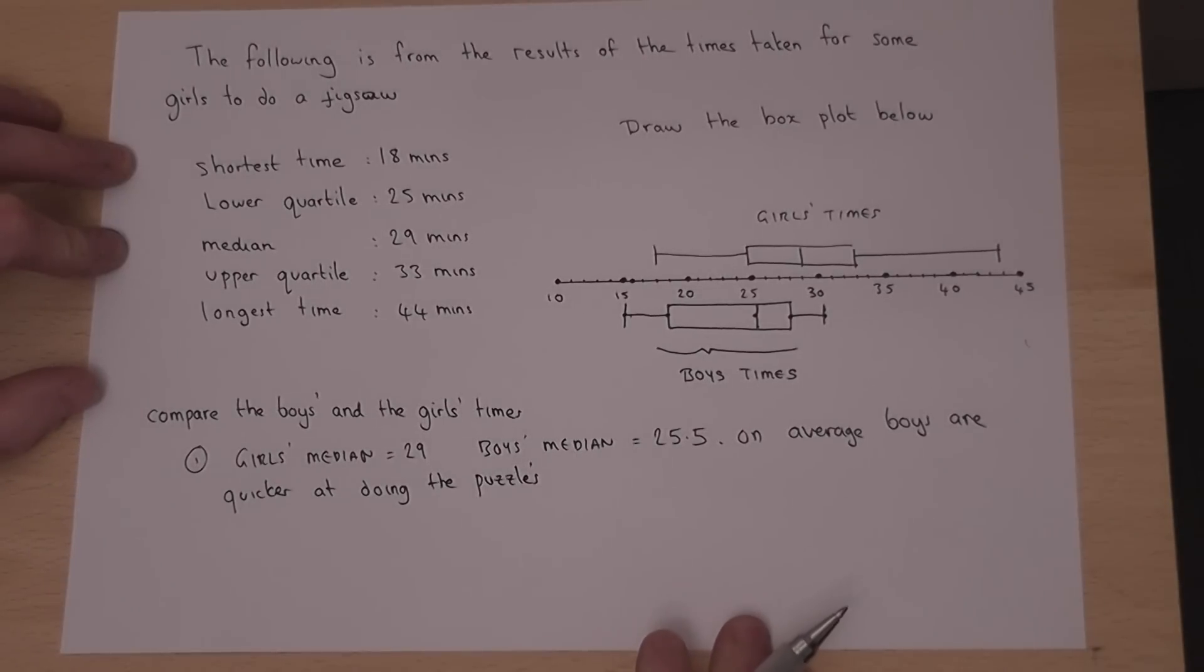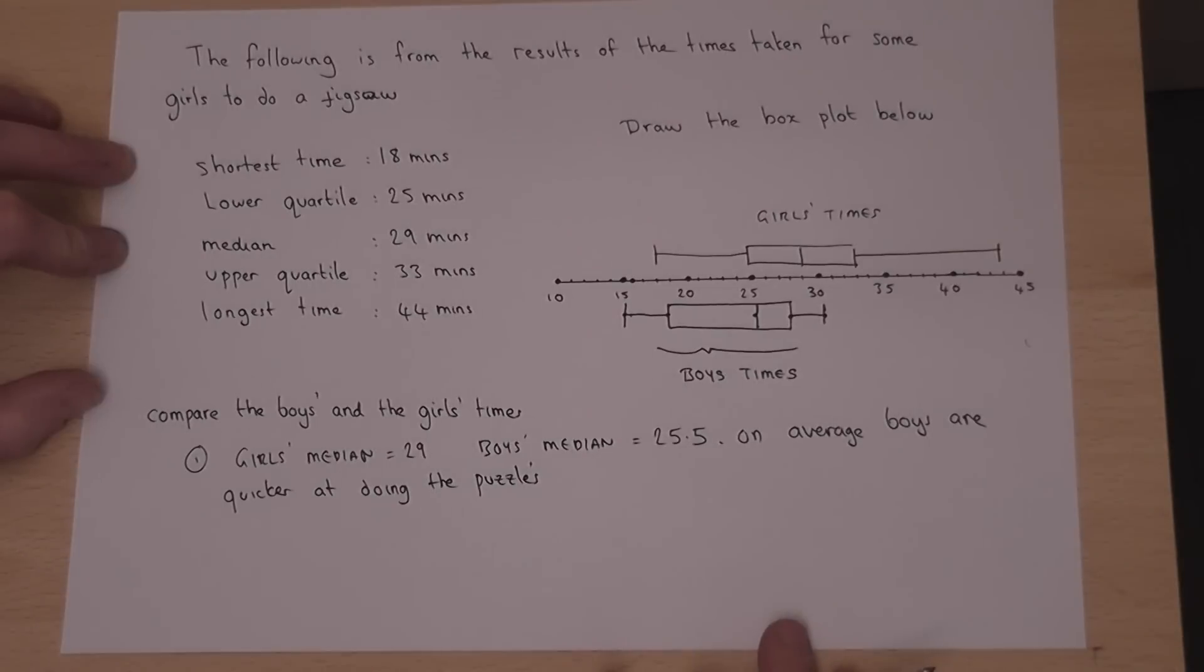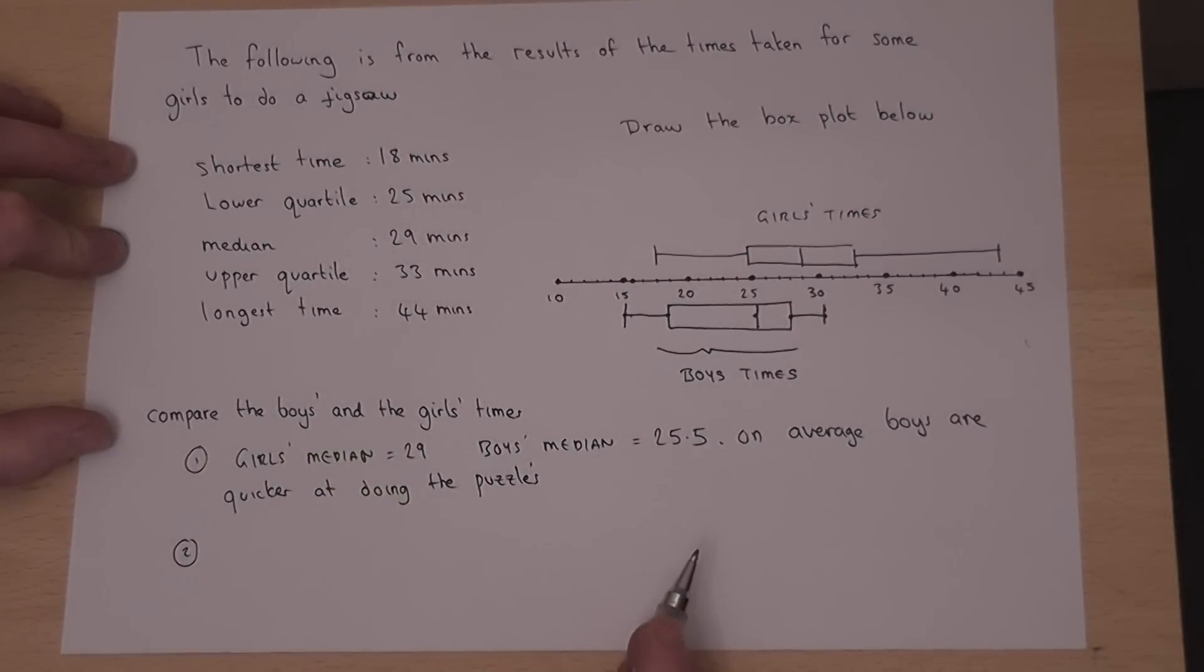This, of course, is also shown by the fact that their graph is to the left, whereas the girls' is to the right. So the median shows that, on average, the boys are quicker than the girls. It's important here to state the exact values being compared.